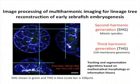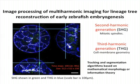One example is the image processing pipeline we have built to analyze multi-harmonic imaging of zebrafish embryos — unstained zebrafish embryos. With second harmonic generation, we see the mitotic spindles, so we can detect when a cell divides. With third harmonic generation, we see the cell shapes. So with one modality we segment the shape, and with the other we build the lineage tree.